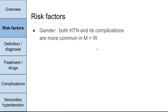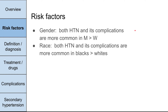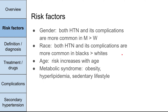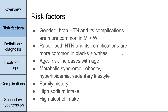These are the risk factors for hypertension. Gender first: both hypertension and its complications are more common in men than women. Race: hypertension and its complications are more common in blacks than whites. Age: your risk for hypertension increases as you get older. Metabolic syndrome, including obesity, hyperlipidemia, and sedentary lifestyle, all predispose you to hypertension. Family history: if your parents have hypertension, you're more likely to have it. High sodium intake and high alcohol intake also predispose you to hypertension.